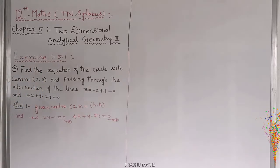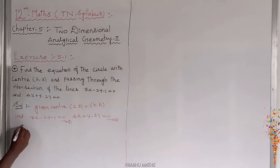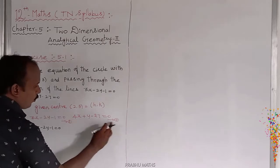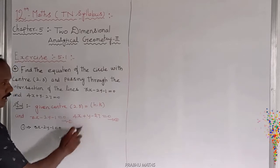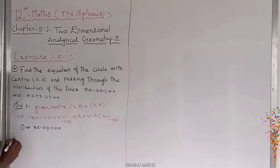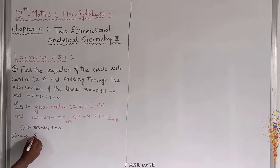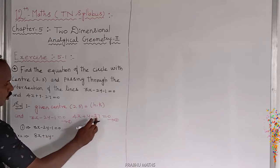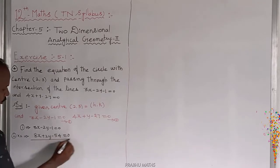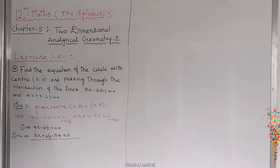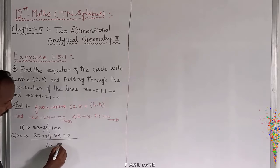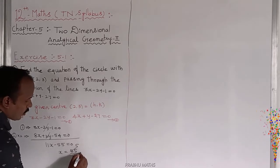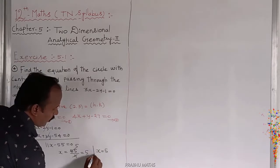Equation number 1: 3X minus 2Y minus 1 equals 0. Multiply equation number 2 by 2 to cancel Y terms. Equation 2 multiplied by 2 gives 8X plus 2Y minus 54 equals 0. Adding both equations: 11X minus 55 equals 0, so X equals 55 divided by 11, which gives X equals 5.